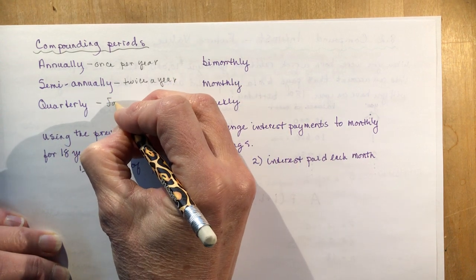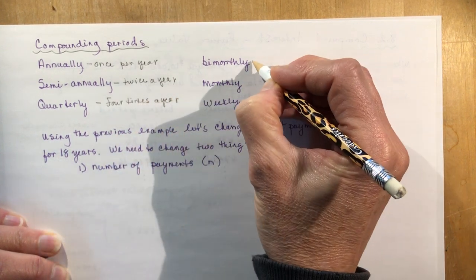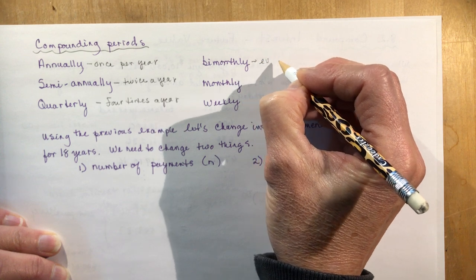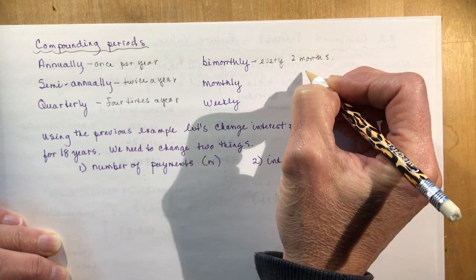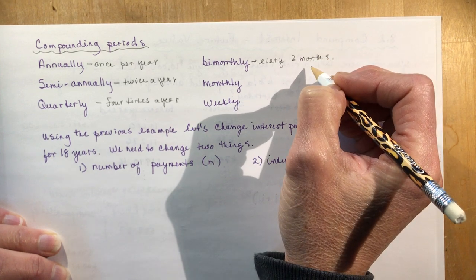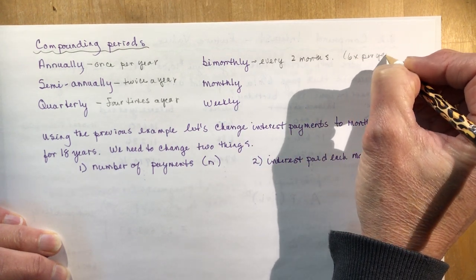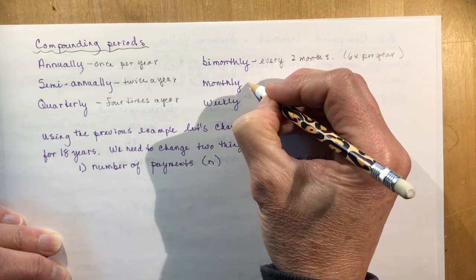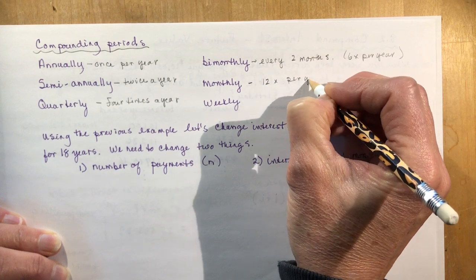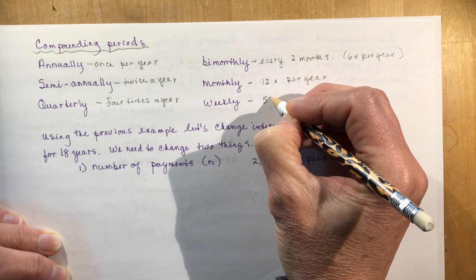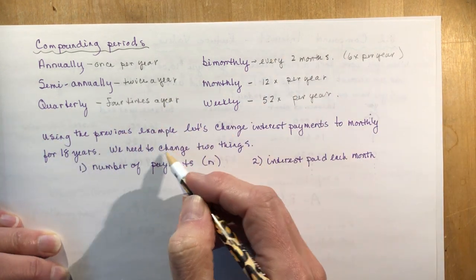Quarterly: four times a year. Bi-monthly means every two months — every two months would be six times a year because there are 12 months, so every two months is six times. Monthly: every month, that's 12 times per year. And weekly: there are 52 weeks in a year, so 52 times per year. Those are your compounding periods that you need to know.